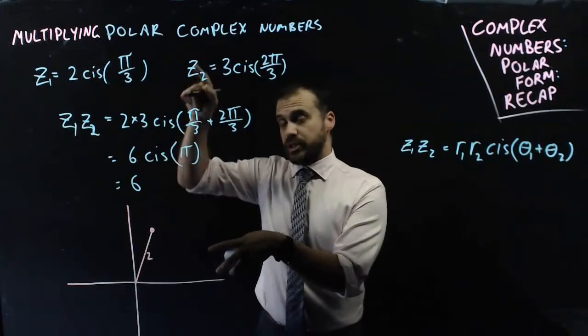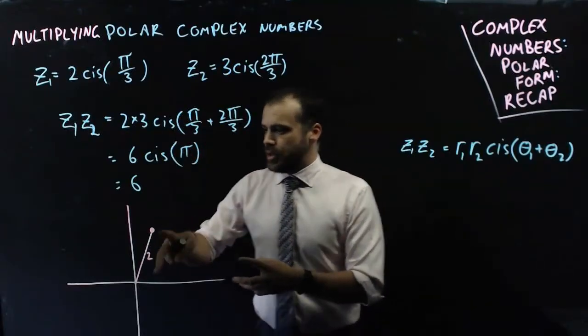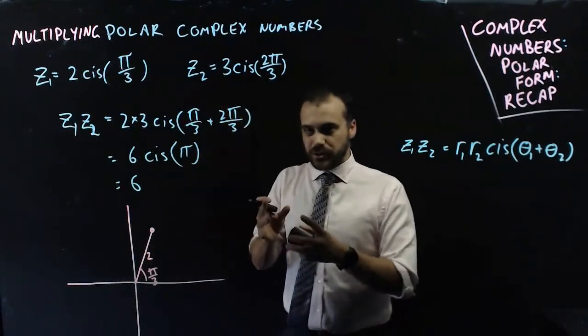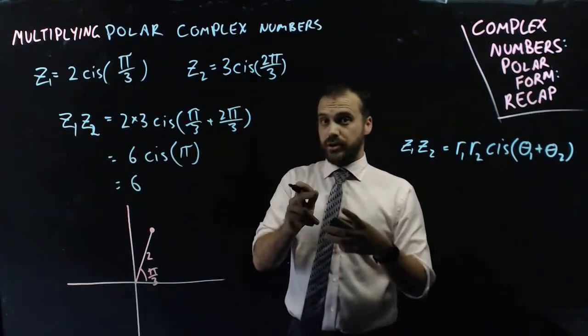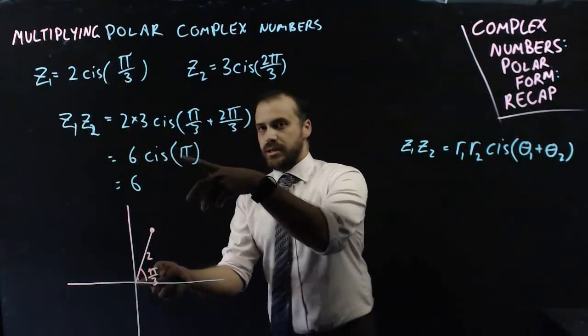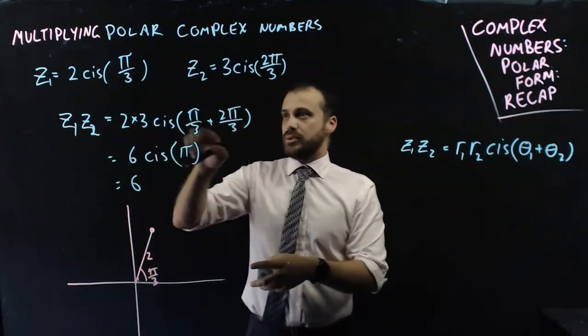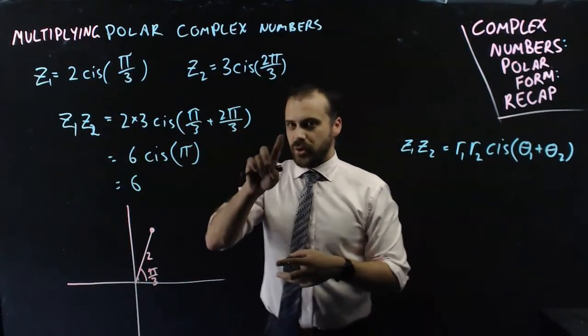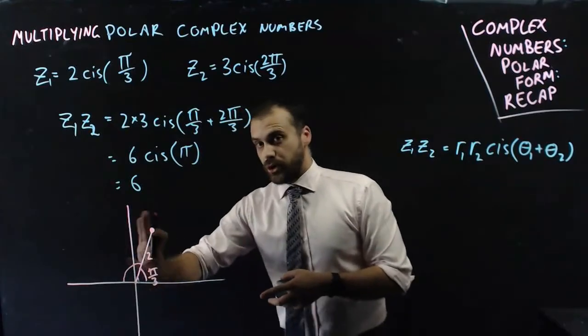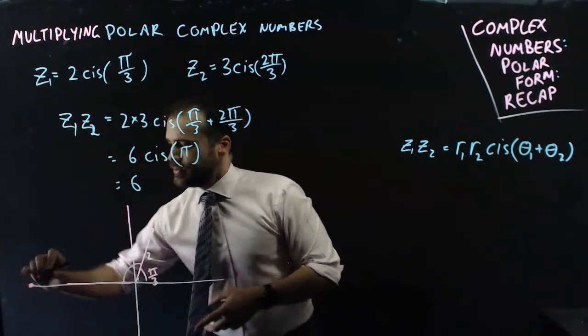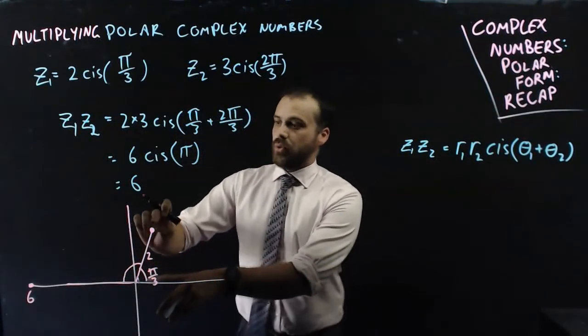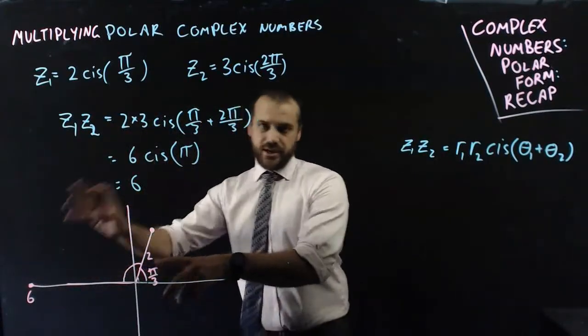This one here is z1, 2 cis pi on 3. That angle there is pi on 3. Now, when I multiply by 3 cis 2 pi on 3, I'm doing two things. One, I'm scaling it up. Because remember, I took the number 2 and multiplied it by 3. And we get the length of 6. What I'm also doing is adding the angle 2 pi on 3. Which has the effect of taking this angle here and adding 2 pi on 3 to it. So we get something that rotates and scales up. So this was z1, 2 cis pi on 3. We've rotated it and scaled it up. Or vice versa, scaled up and rotated it. Same idea.